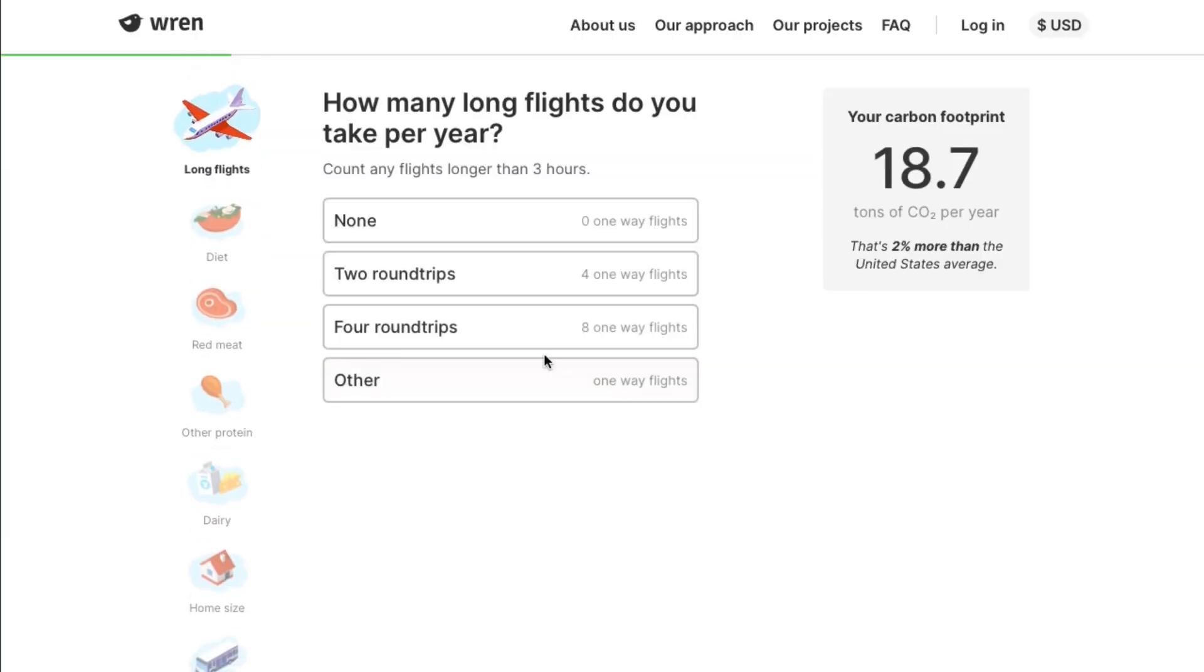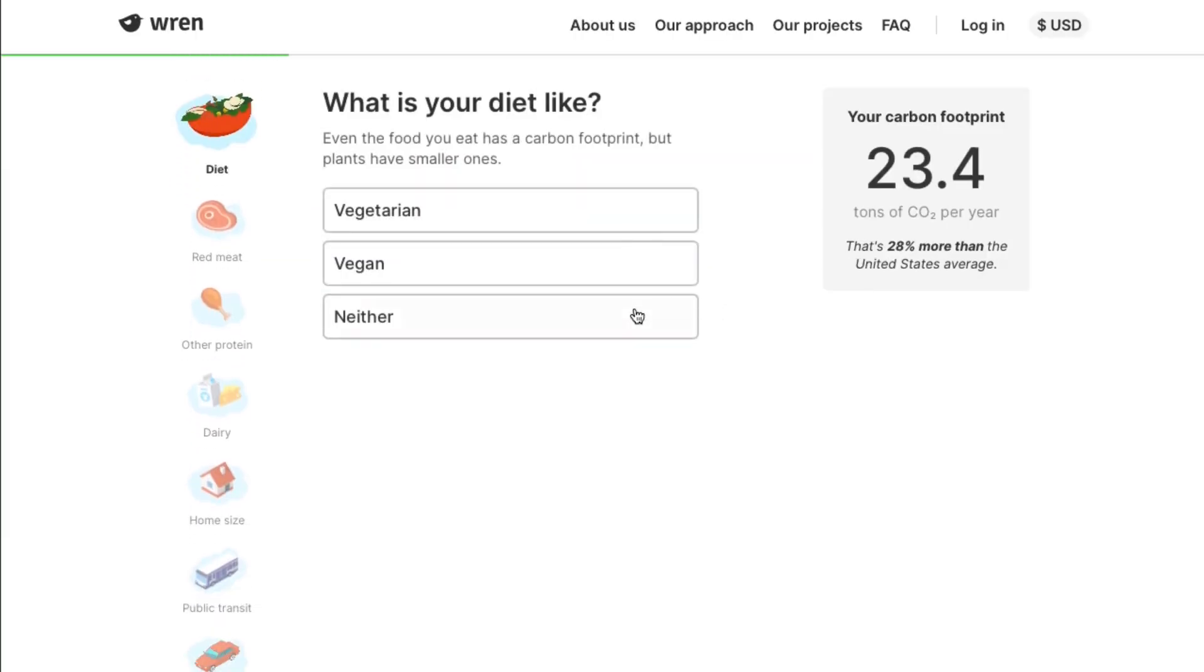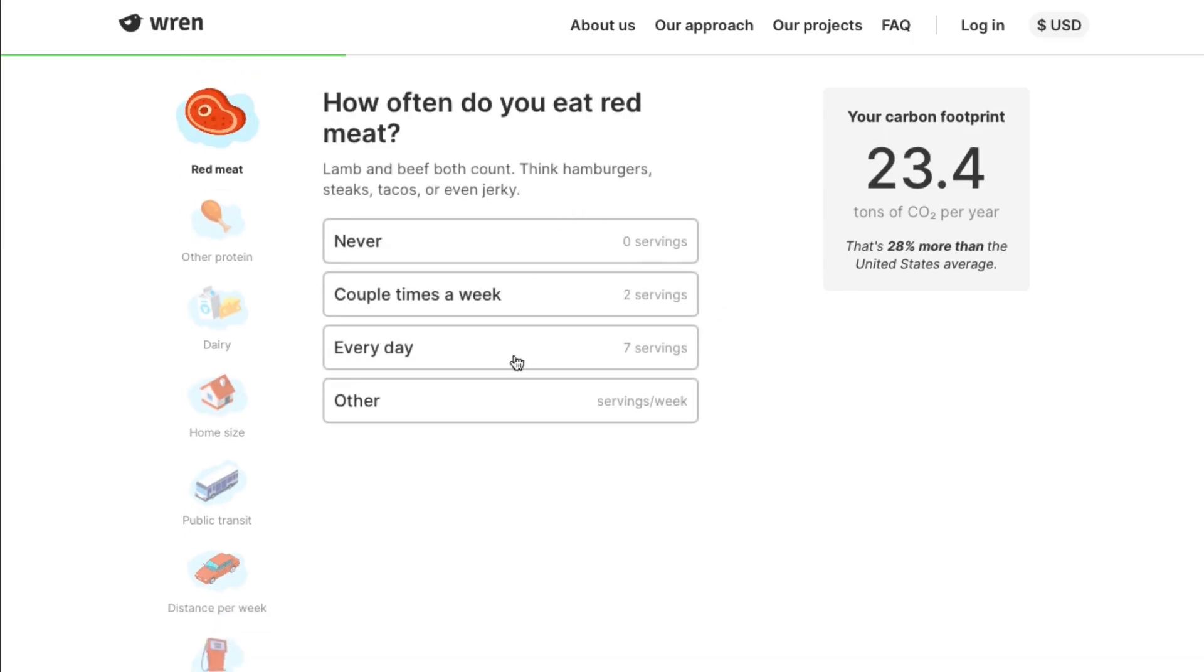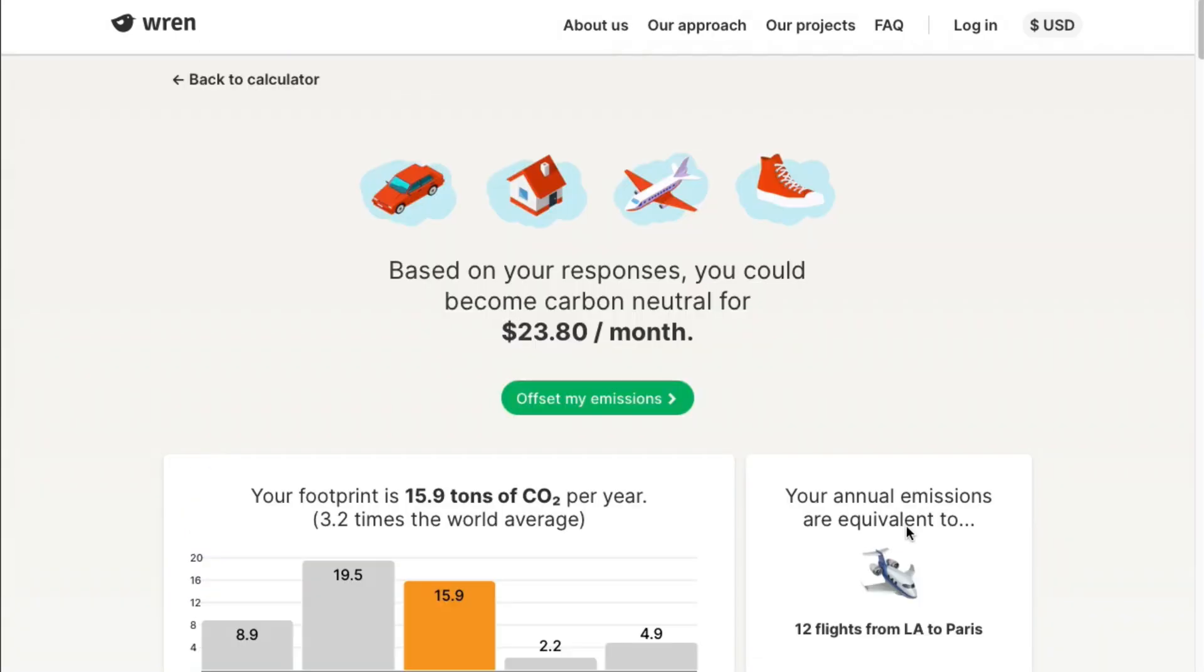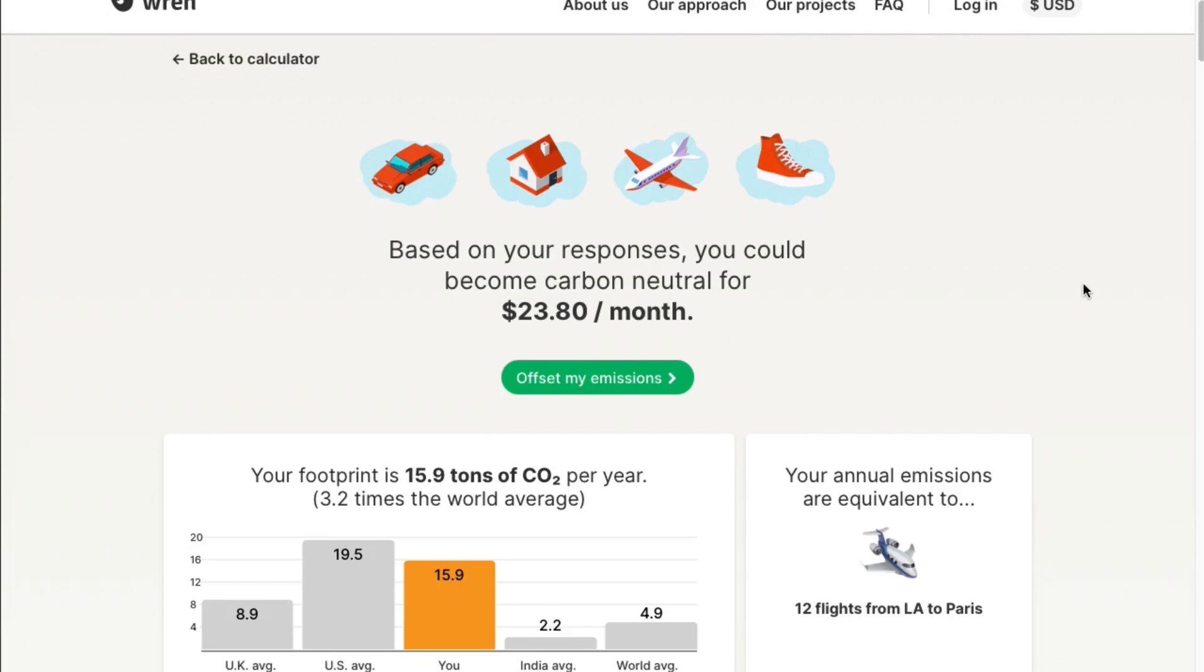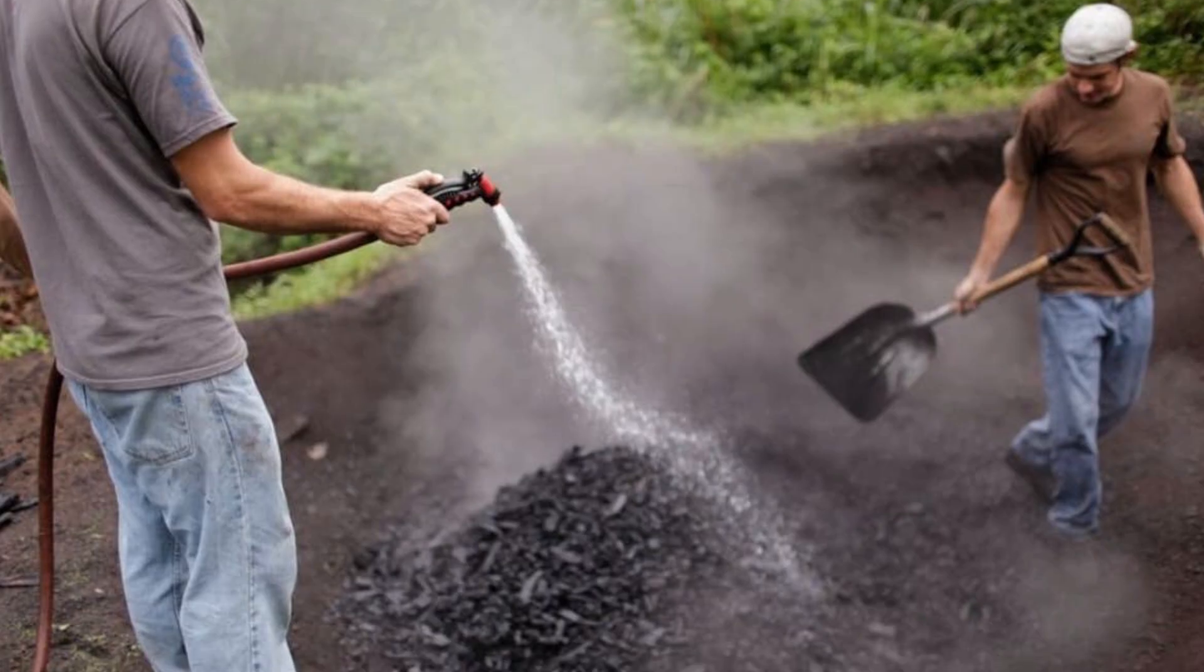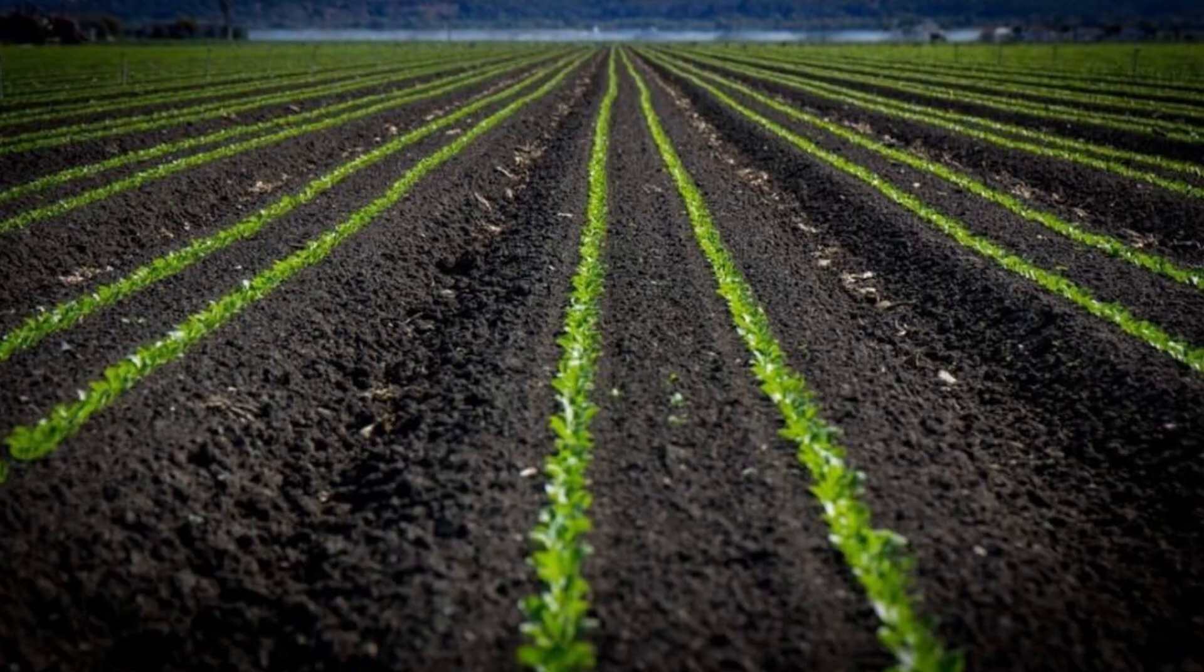With a little information about your habits and lifestyle, our sponsor REN calculates your current carbon footprint and makes all sorts of suggestions about how to reduce it. REN also allows you to offset the carbon that you do release by making a monthly contribution towards projects like this one, which turns wildfire-burned trees into natural crop fertilizer.